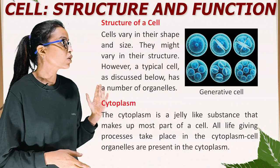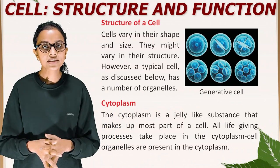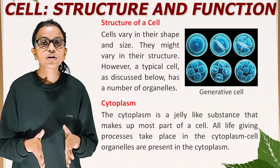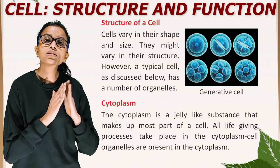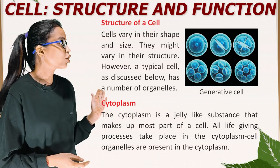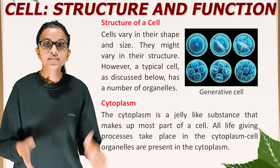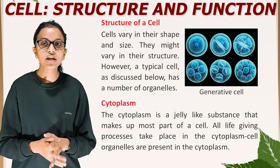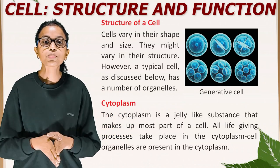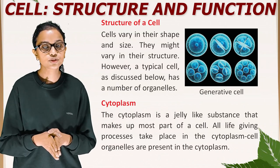Now, structure of a cell. Cells vary in their shape and size and might vary in their structure. However, a typical cell has a number of organelles. This is a picture of a generative cell. Cytoplasm: the cytoplasm is a jelly-like substance that makes up most of the cell. All life-giving processes take place in the cytoplasm, and cell organelles are present in the cytoplasm.